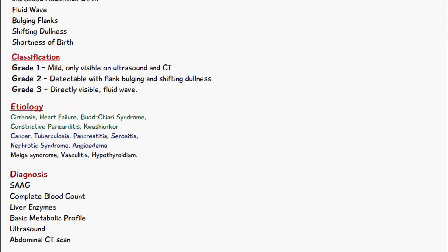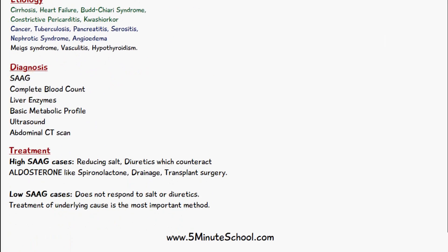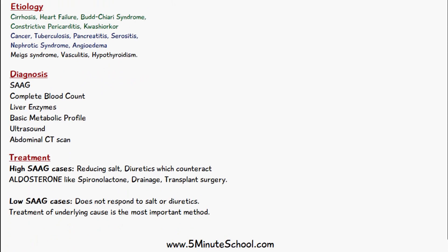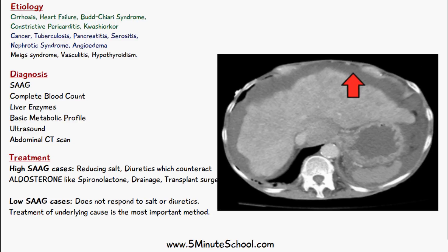For the diagnosis of ascites, there are several tests to help distinguish the type of fluid. The SAAG test helps determine whether it is exudate or transudate fluid. A complete blood count is also done along with liver enzymes and a basic metabolic profile. Ultrasound and abdominal CT scan are performed to scan the abdomen and rule out any abdominal masses.